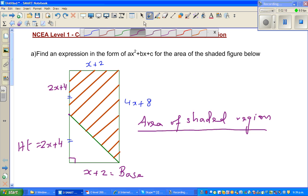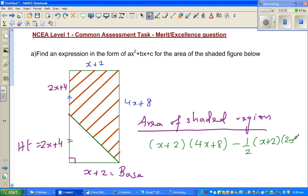Let me change color. The area of the rectangle is (x + 2) times base times height which is (4x + 8), minus half the area of this unshaded part which is ½ times base which is again (x + 2) times the height which is (2x + 4).